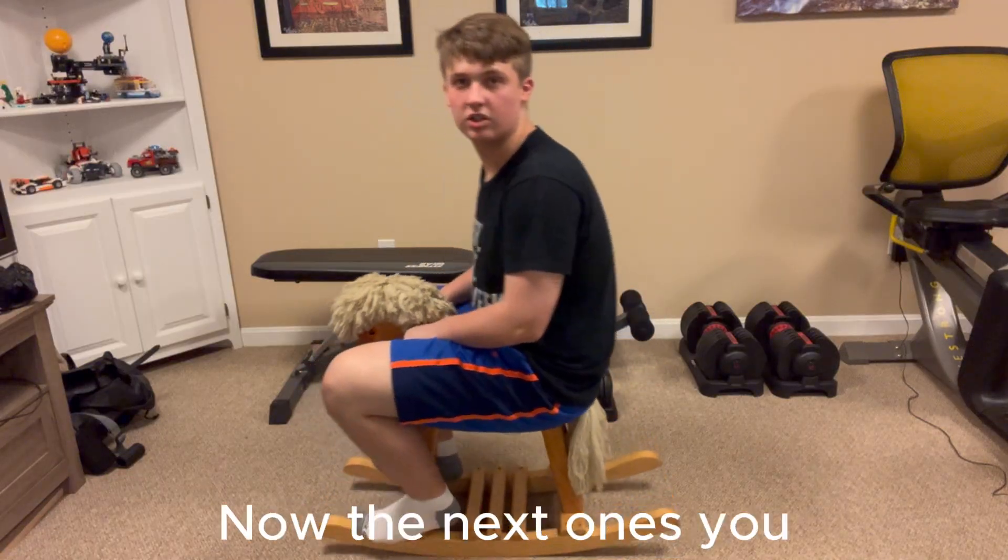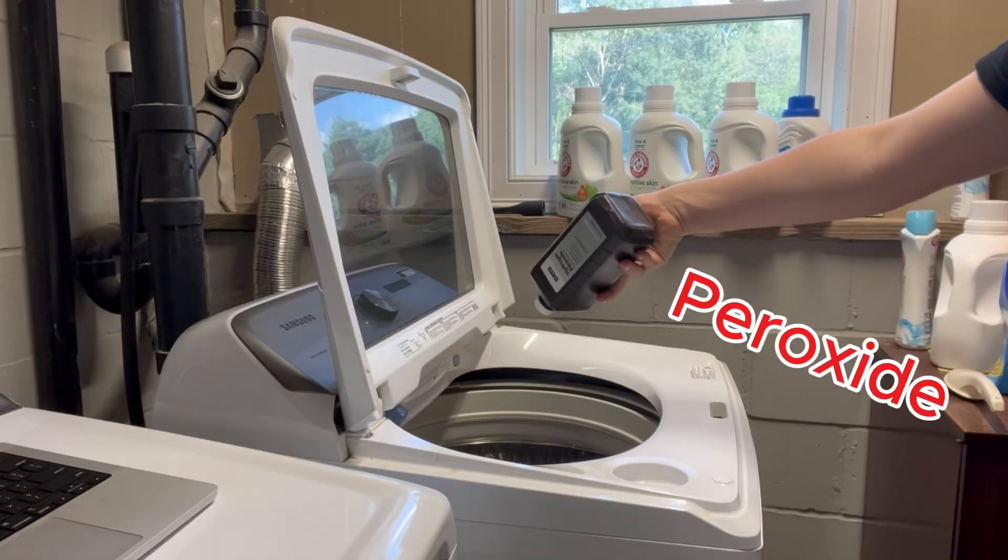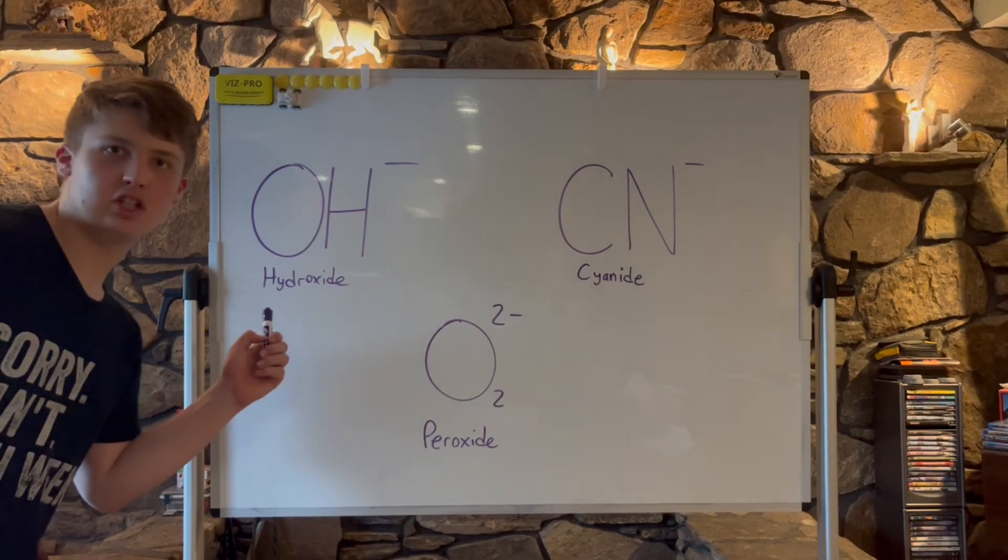Now the next ones you might recognize: hydroxide, peroxide, cyanide. OH minus one, O2 minus two, CN minus one, laid out for you. Now ions from before can have some extra atoms added. They don't make them neutral.